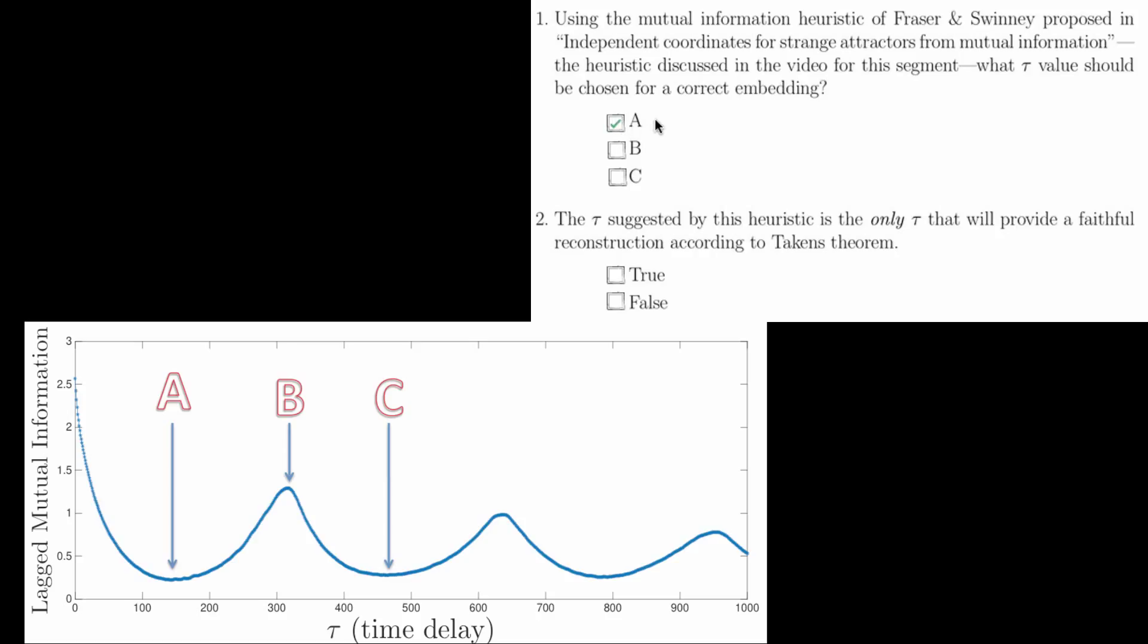Question 2 asks if the tau suggested by this heuristic is the only tau that will provide a faithful reconstruction according to Takens' theorem, and this is false. All the Takens' theorem requires is that tau is greater than zero. All the other heuristics that appear in the literature are simply for choosing a good numerical approximation of this value.